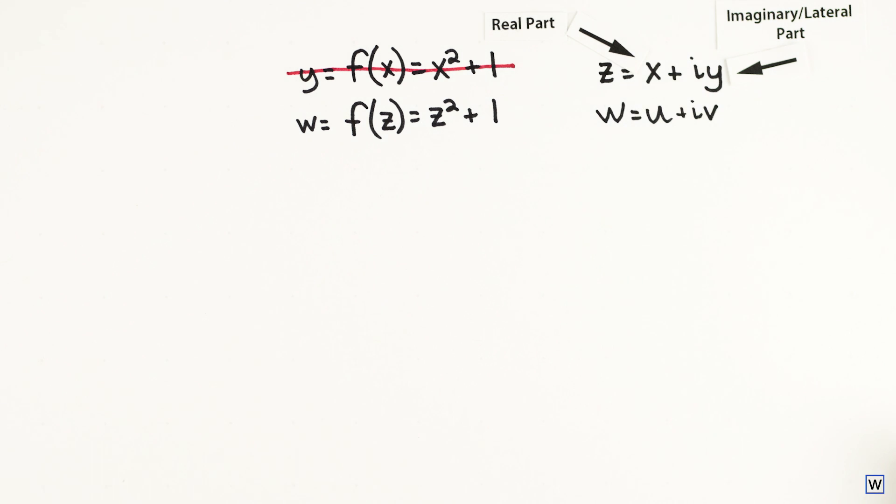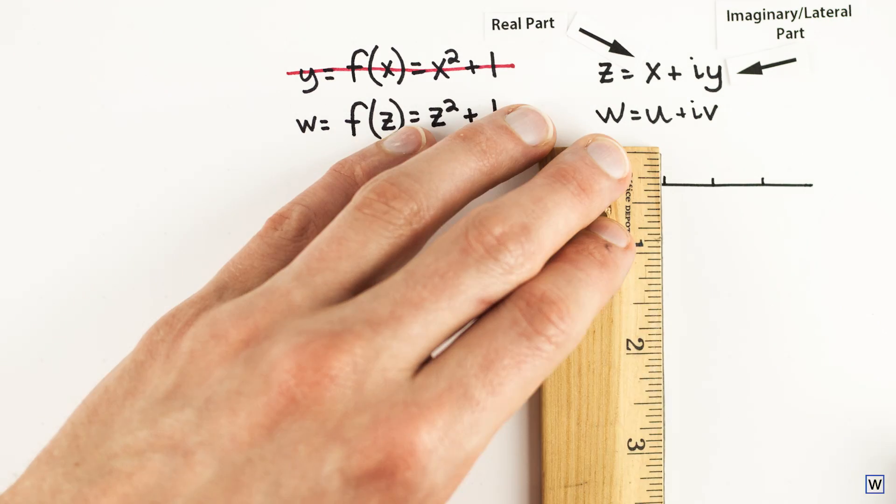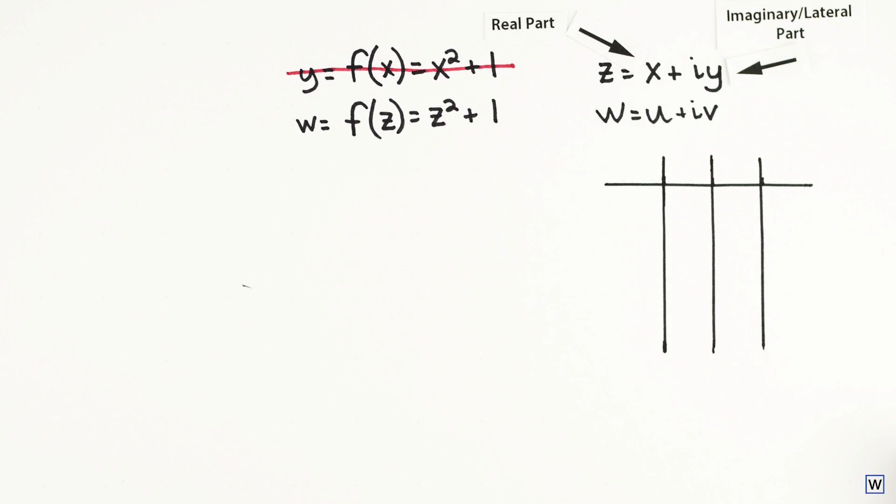Just as we can use tables to keep track of our inputs and outputs for real valued functions, we can also use tables to keep track of our inputs and outputs for complex functions. However, we now need four columns to keep track of our four variables: x, y, u, and v.